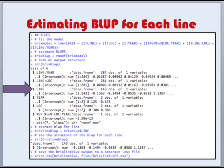So now we're ready to estimate BLUPs for each line using R. We go back to our random effects model that we discussed earlier, and then we use the command RANEF for our model, and this calculates BLUPs for all of the random effects within a model.